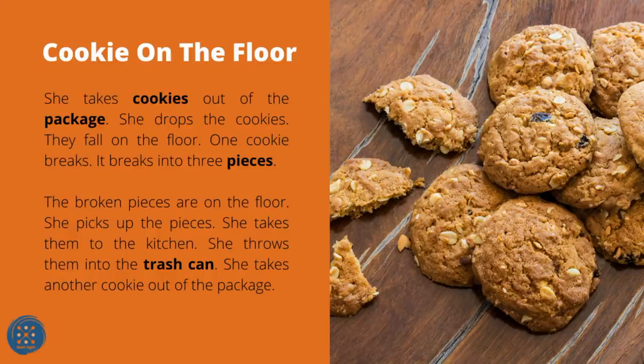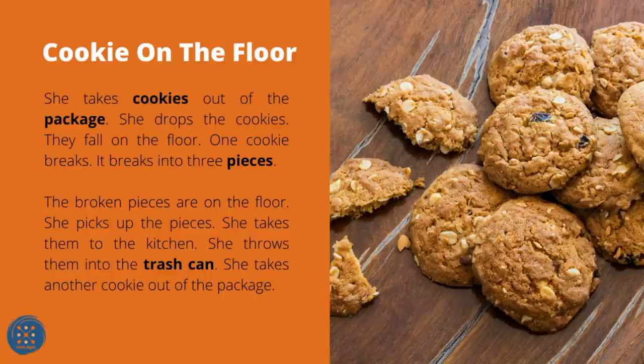Cookie on the Floor. She takes cookies out of the package and drops them — they fall on the floor. One cookie breaks into three pieces. The broken pieces are on the floor. She picks up the pieces, takes them to the kitchen, and throws them into the trash can. She takes another cookie out of the package.